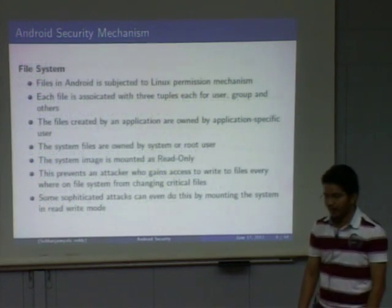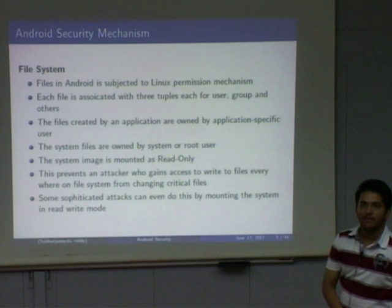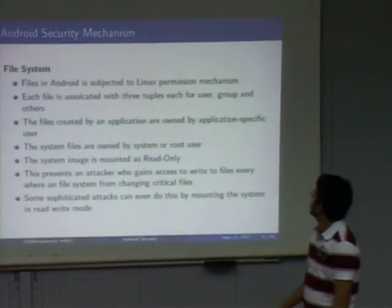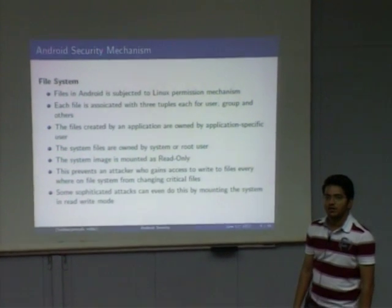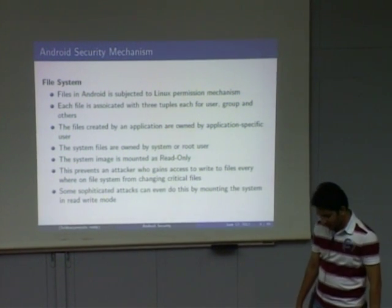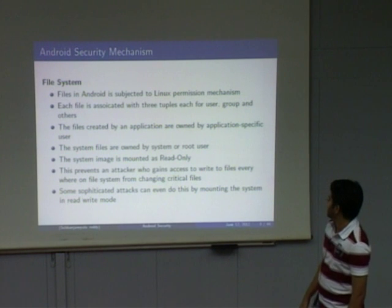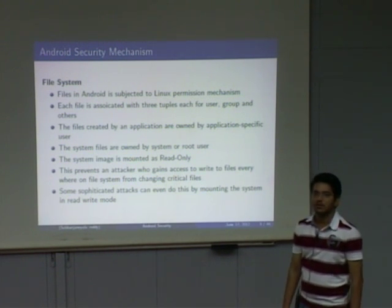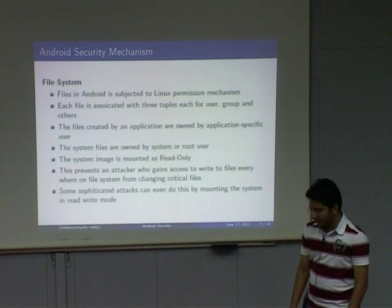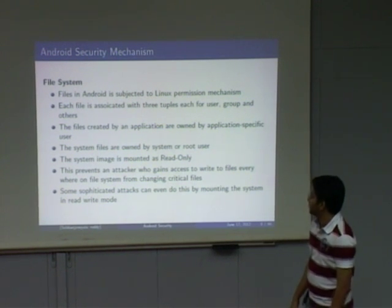Android implements the Linux file system. Each file has three tuples — one each for user, group, and others — with read, write, and execute permissions. Files owned by an application cannot be used by other applications unless explicitly specified. The system image is mounted in read mode, so even if a malicious application accesses files, it cannot change critical files because the system drive is mounted read-only. An attacker could potentially remount it in read-write mode to change critical files.